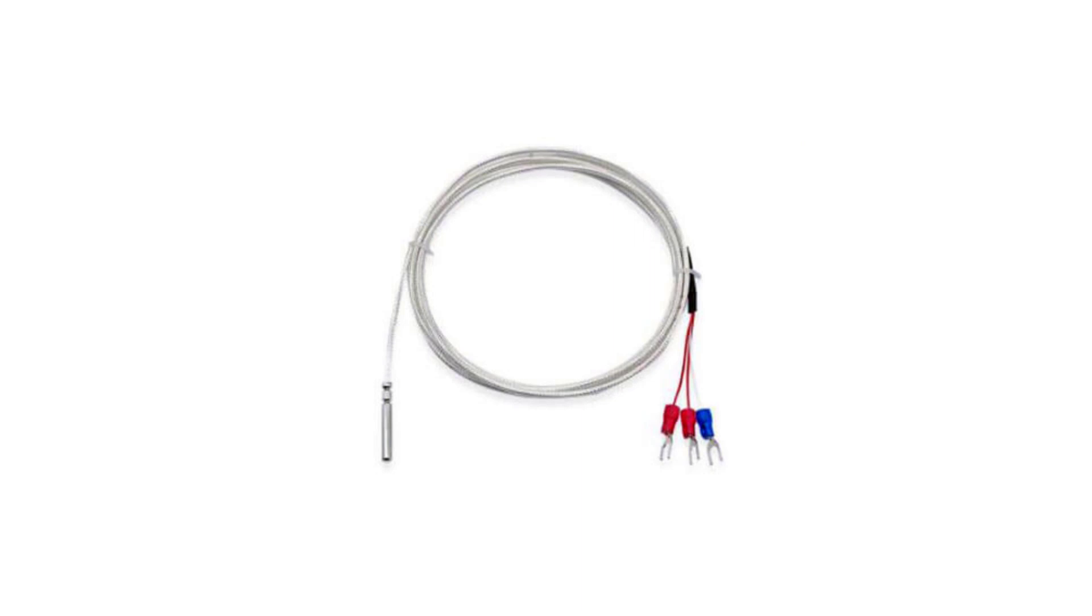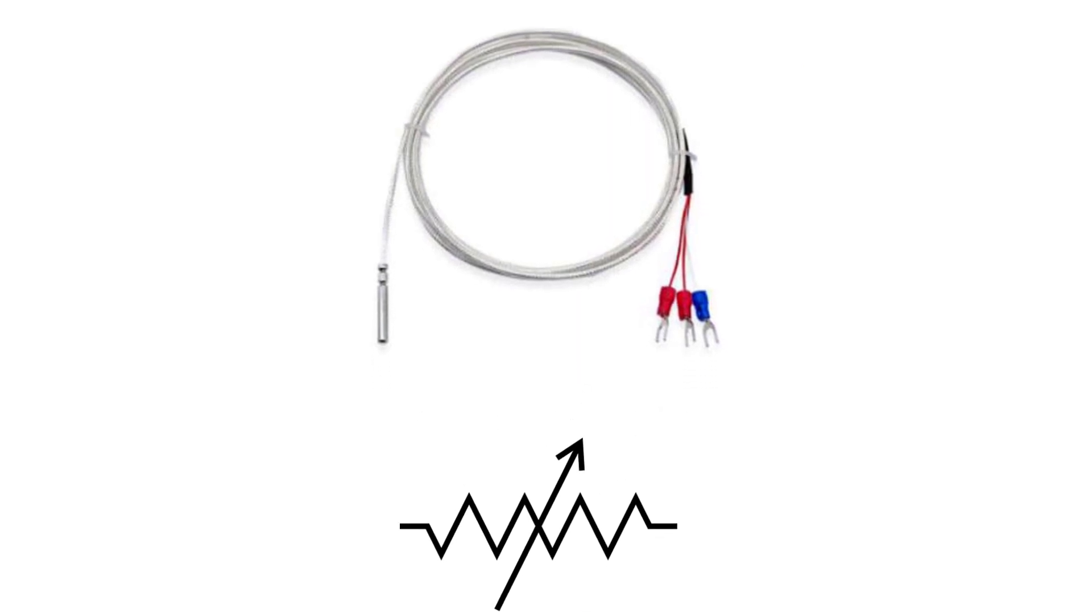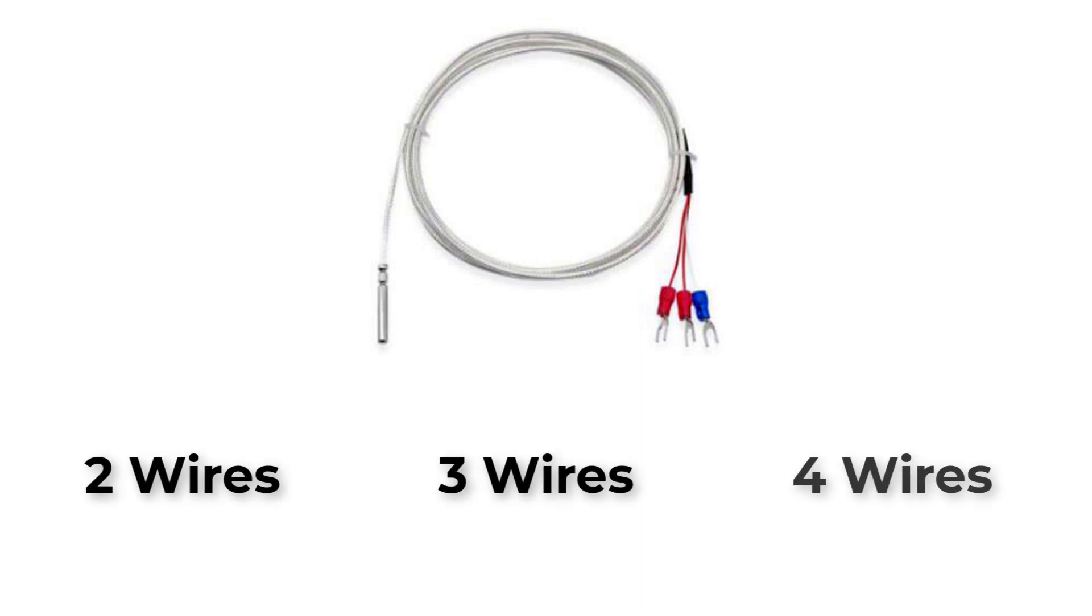PT100 sensor is a variable resistance that changes with temperature as illustrated in the video in the description down below. You will find 3 types of this PT100 sensor: 2-wire, 3-wire, and 4-wire.